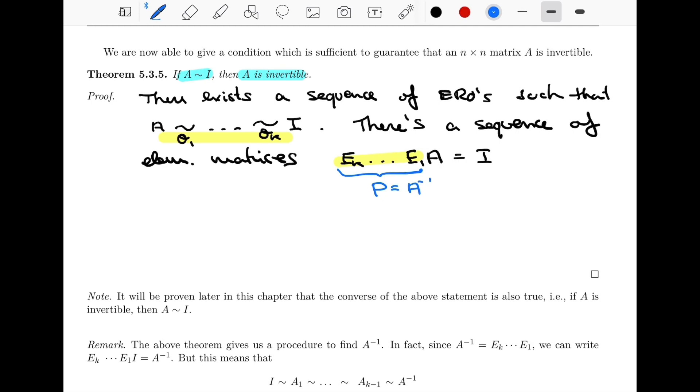Since P times A, right, P is an invertible matrix, and P times A equals I, well then by definition, this matrix is A inverse. And that's the entire proof, right? The matrix A is invertible, because we started with a matrix that was rho equivalent to I, and we're able to show that the matrix is invertible.